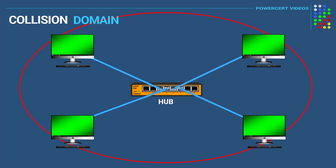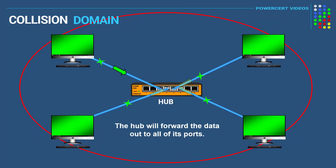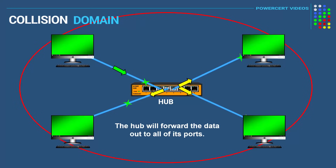When a computer connected to this hub sends data, the hub will forward the data out to all of its ports, which means that every other computer connected to this hub will receive the data regardless if it was meant for them or not. So the more devices that you have connected to a hub, which creates one large collision domain, the more likely collisions will occur. This is why collisions happen in a hub environment.